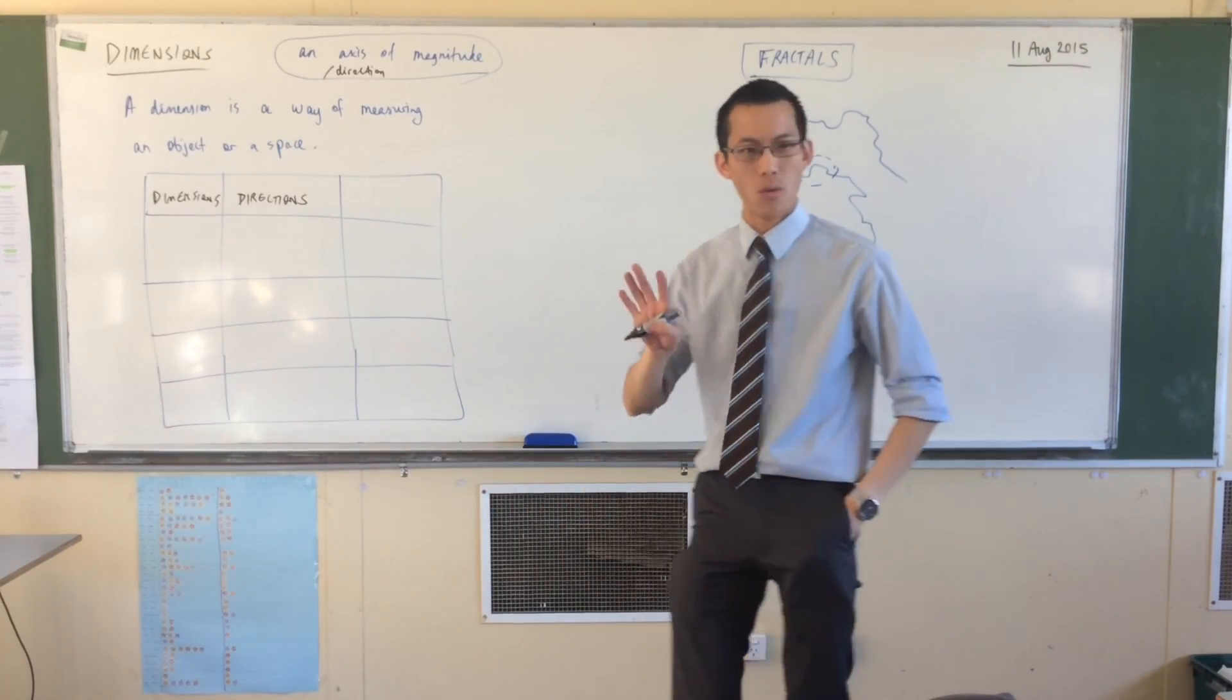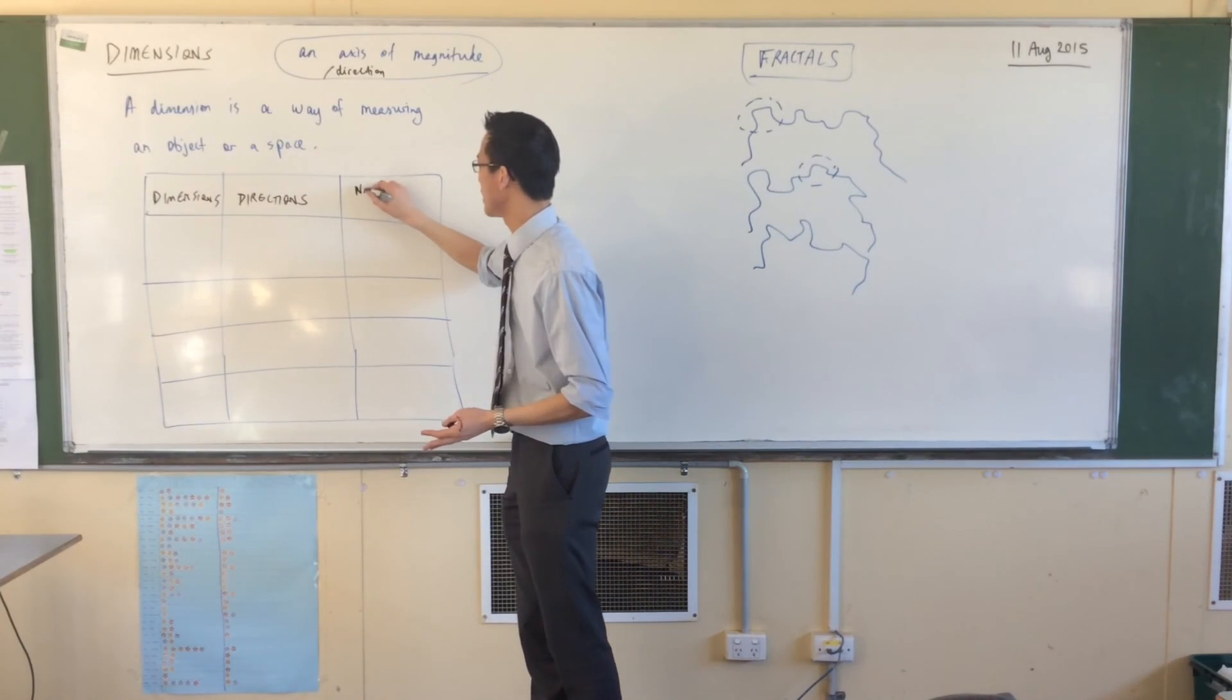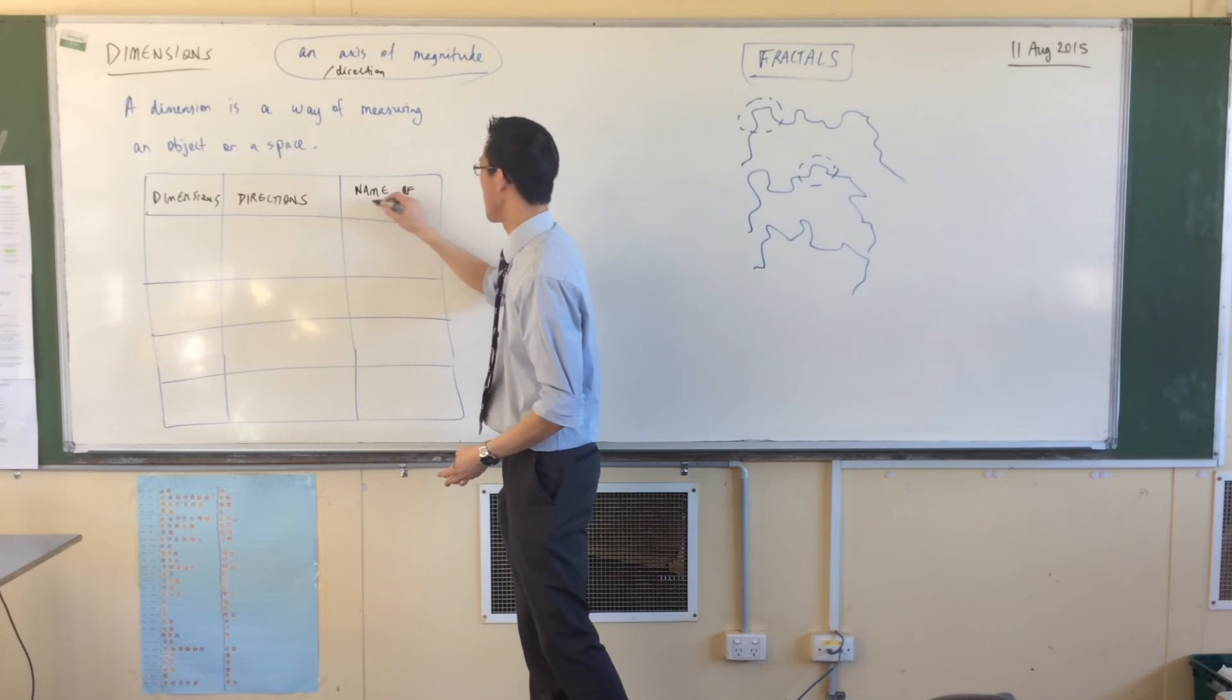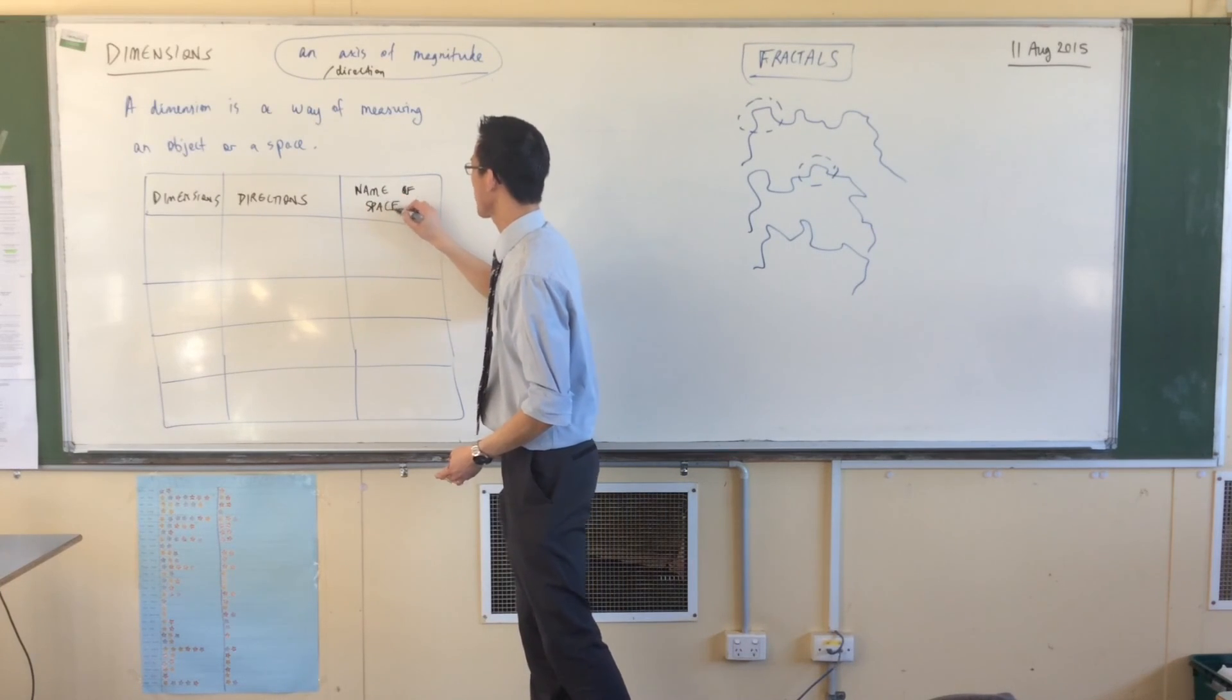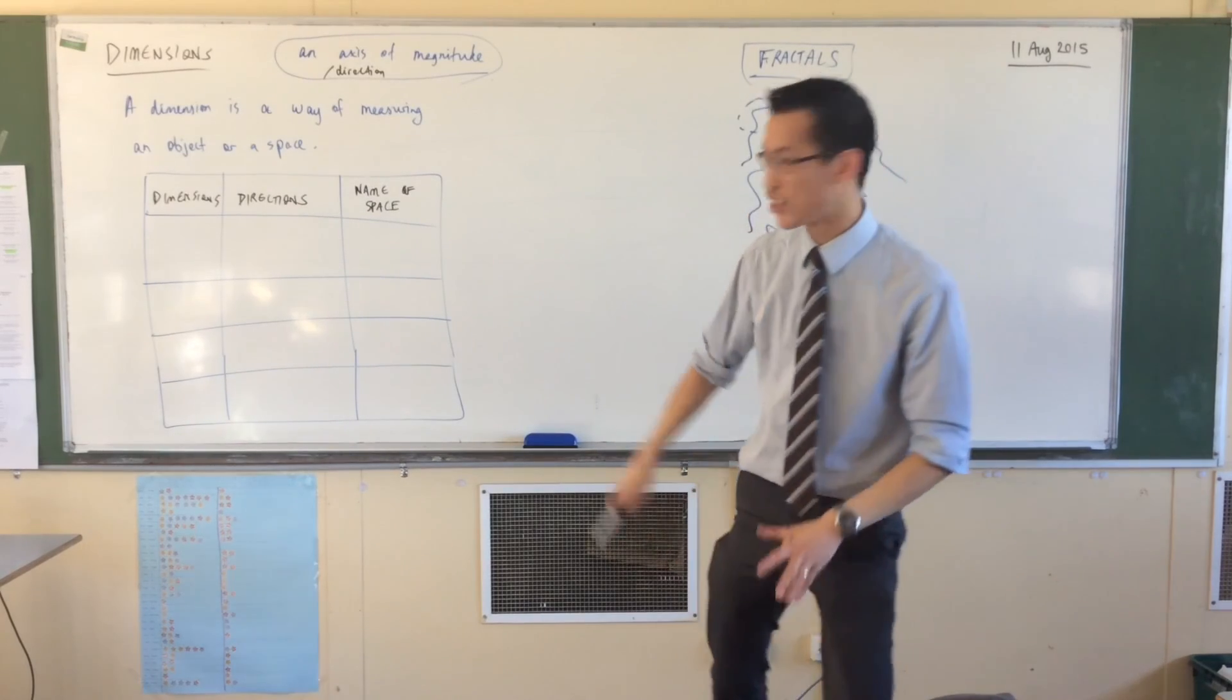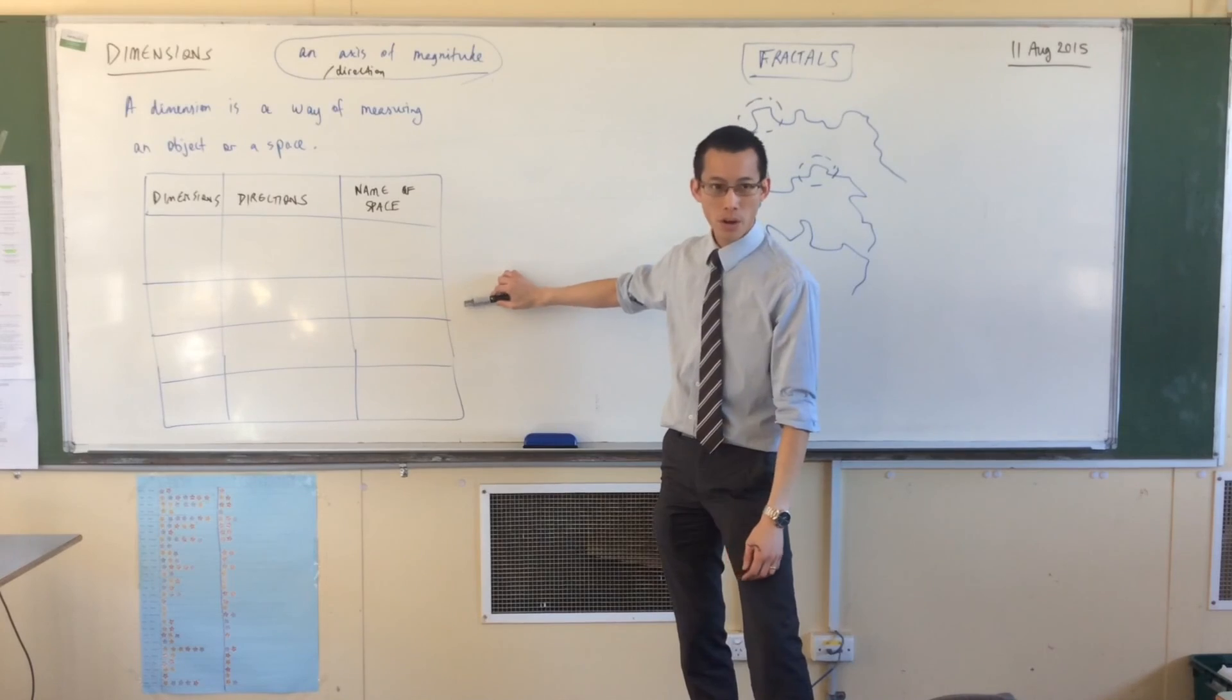And then what we're going to have on the end is, what would you name an object in this space? So what would you name the thing? Do you have names for these? Now, for reasons that will become clear in a moment, I'm going to leave that first row blank. It's a bit strange. We'll come back to it.